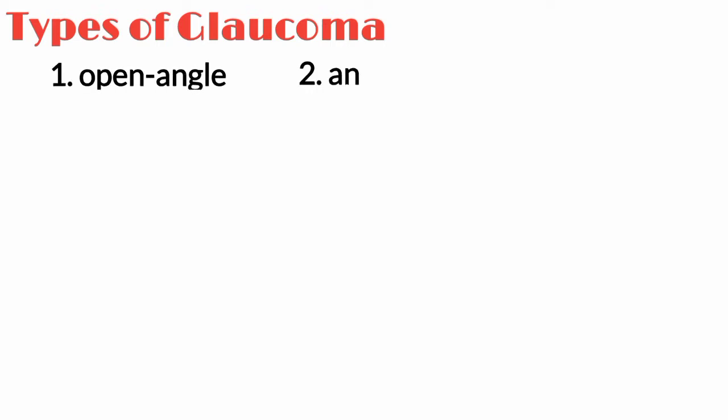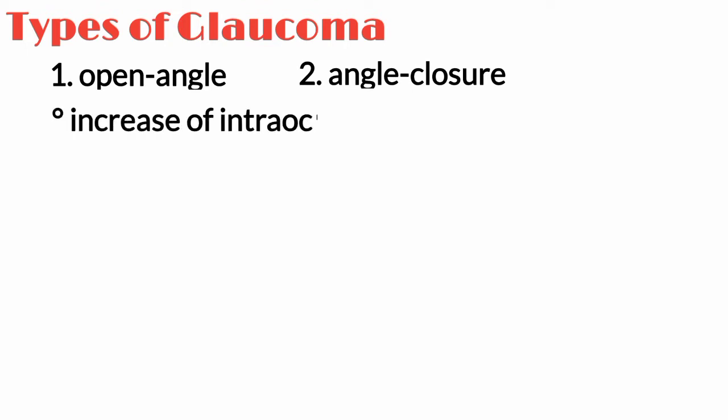Types of glaucoma. There are several types of glaucoma. The two main types are open angle and angle closure glaucoma. These are marked by an increase of intraocular pressure, or pressure inside the eye.